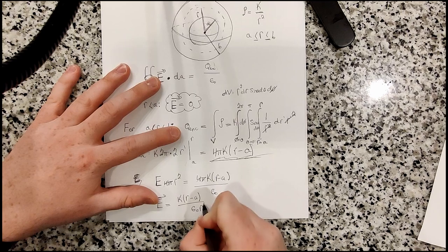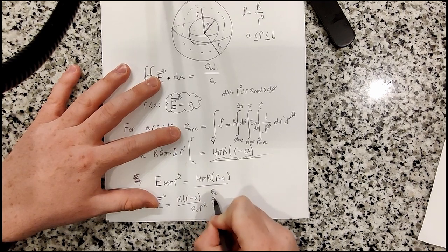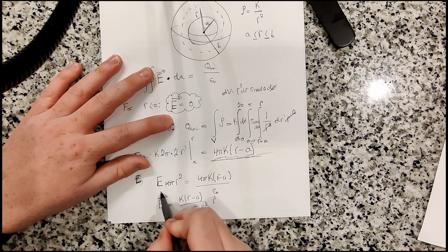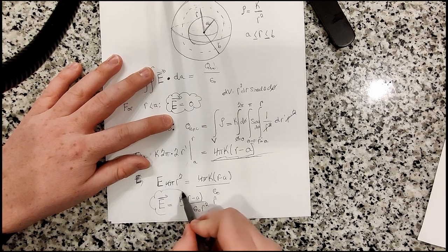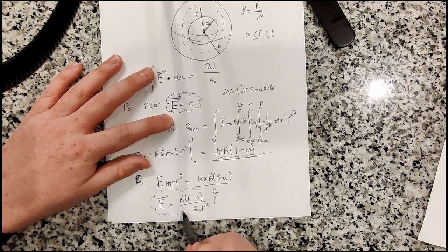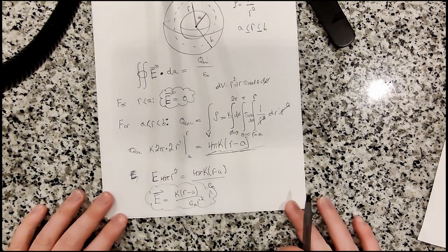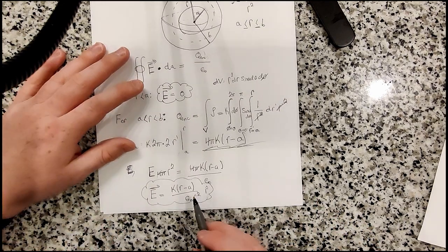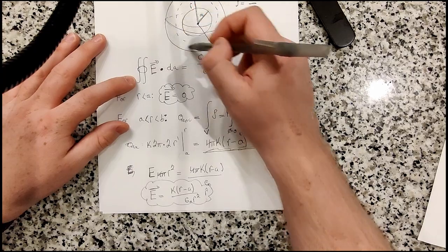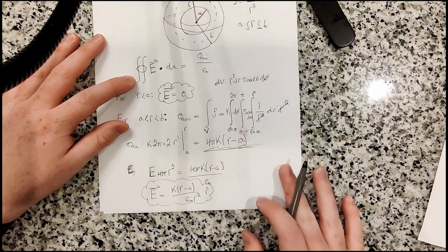And the r squared on the bottom, and the r hat direction. Let me just kind of circle that in. All right. So that is the electric field in the region here between the two inner spheres.